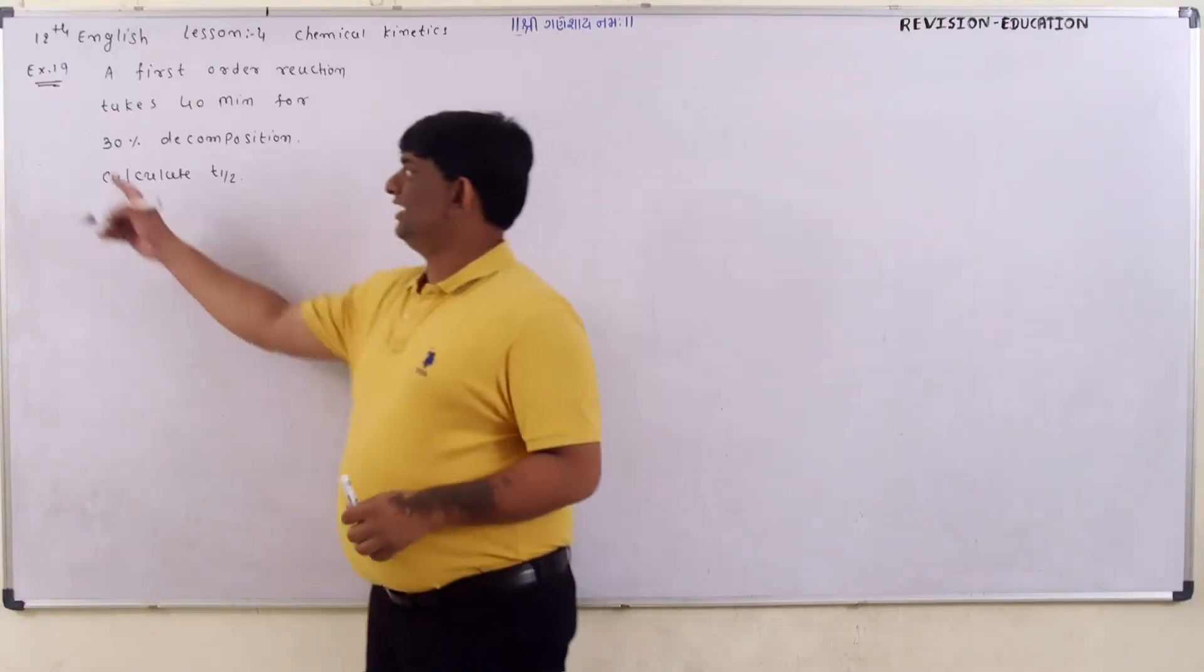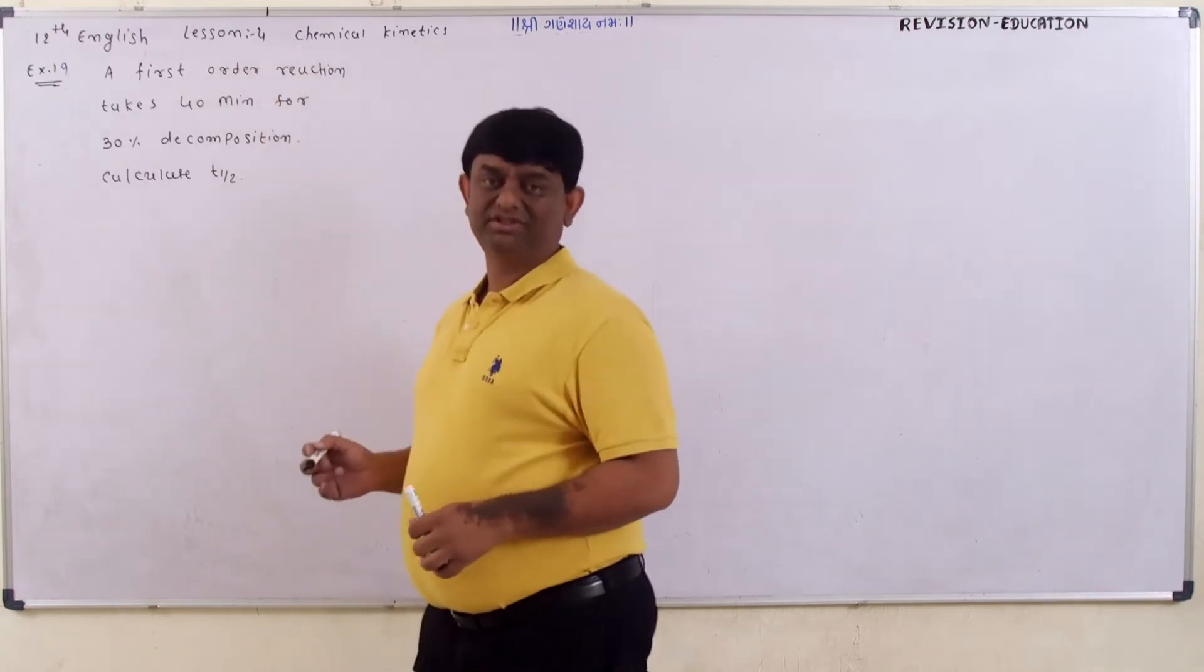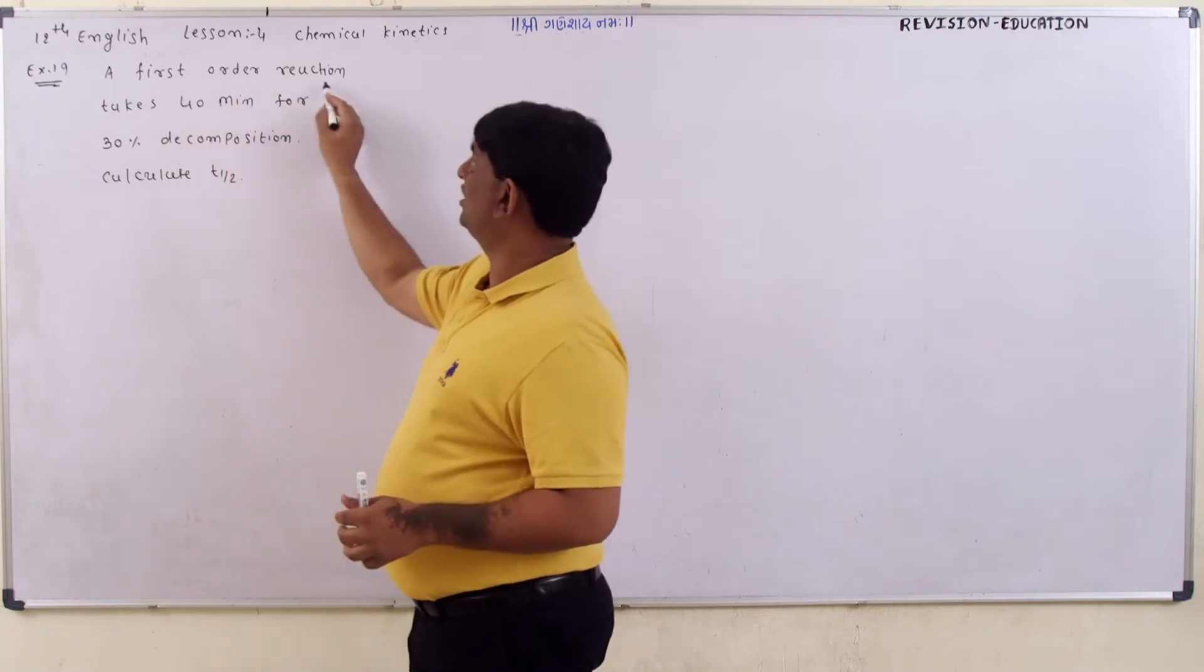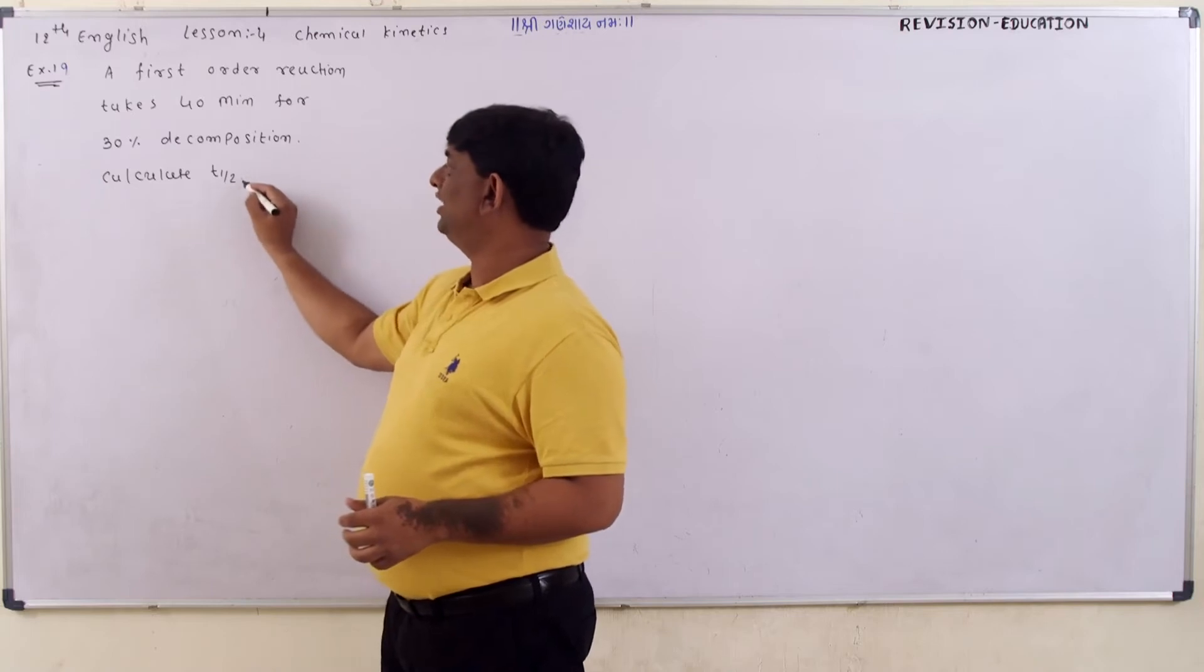Friends, now we are going towards exercise number 19 in chemical kinetics, lesson number four, subject chemistry. The question is: the first order reaction takes 40 minutes for 30 percent completion. Calculate half time.